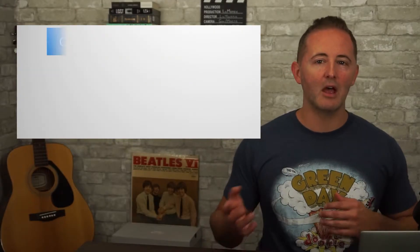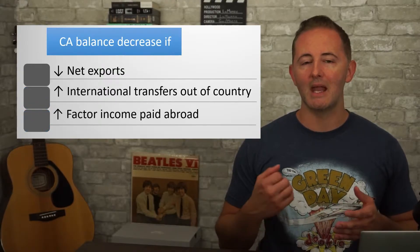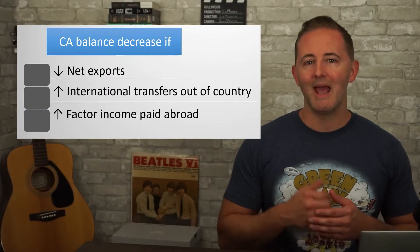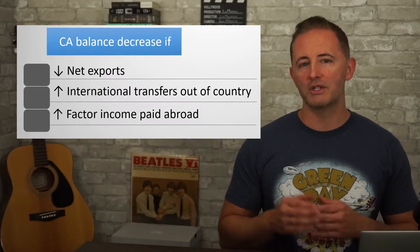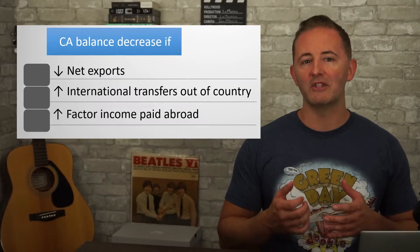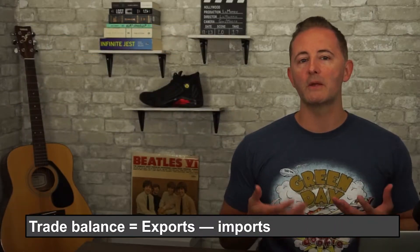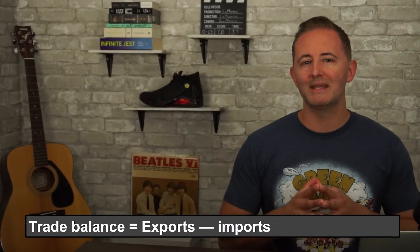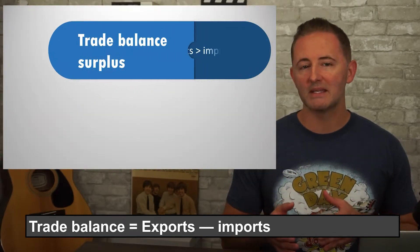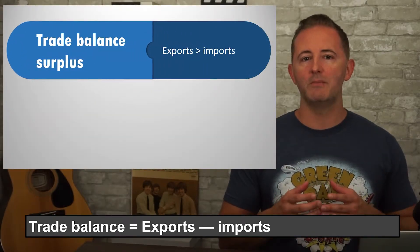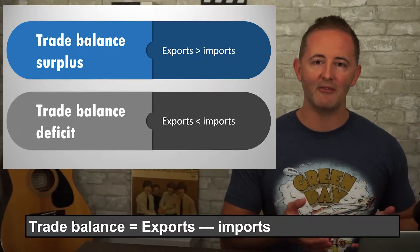On the other hand, a country's current account balance will decrease if there's a decrease in net exports, an increase in international transfers going out of the country, or an increase in rent, wages, interest, or profits paid to people in other countries. Within the current account, there's also the trade balance, which is the difference between exports and imports. When net exports are positive, there's a trade balance surplus, and when net exports are negative, there's a trade balance deficit.